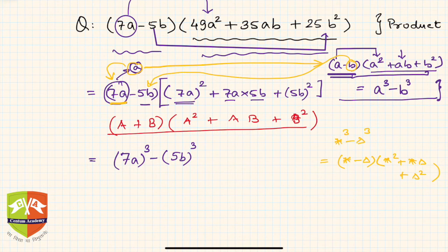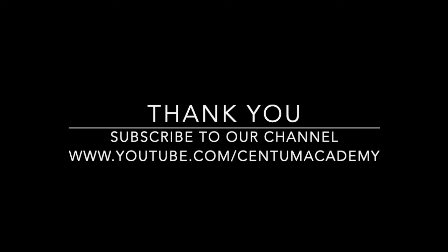So if star here is 7a and delta is 5b, then this is nothing but star cube minus delta cube. So without actually doing any multiplication we arrived at the result. That's the beauty of algebraic identities.